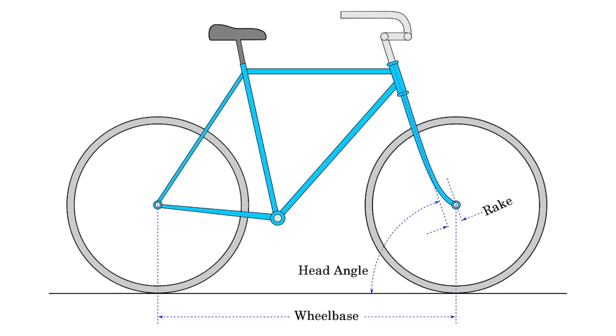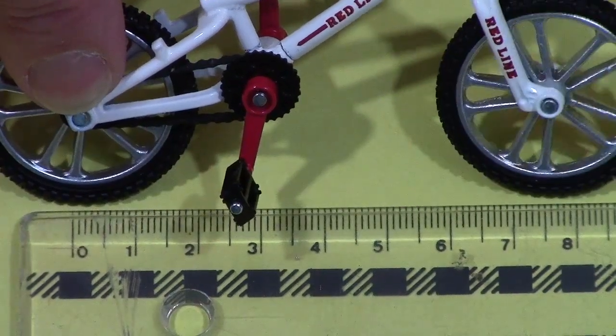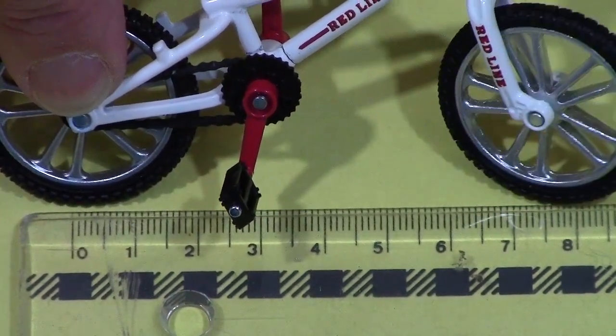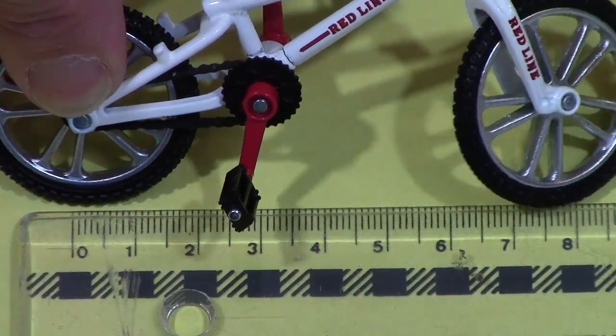frame designers carefully set the fork at an angle from vertical, and they set the front axle slightly forward from the steering axis. These factors determine stability and cause the wheel base to change slightly when you steer and as you lean during a turn.